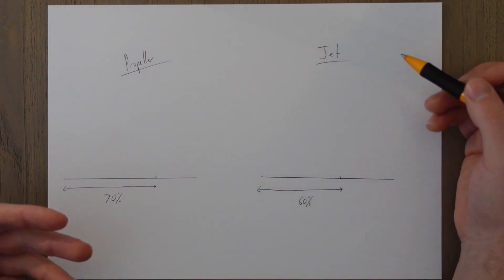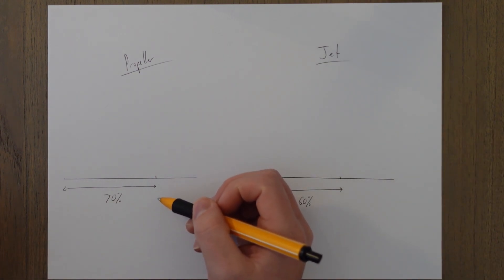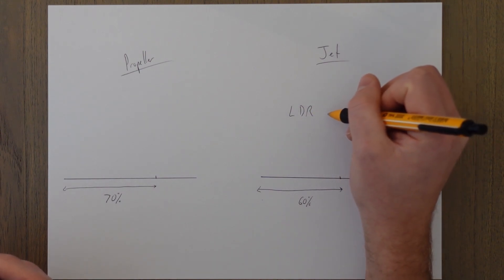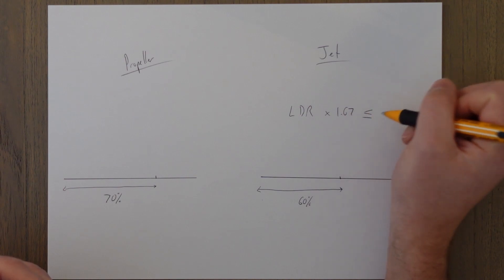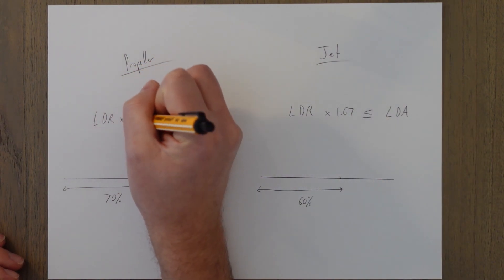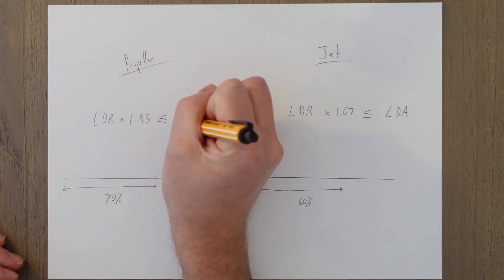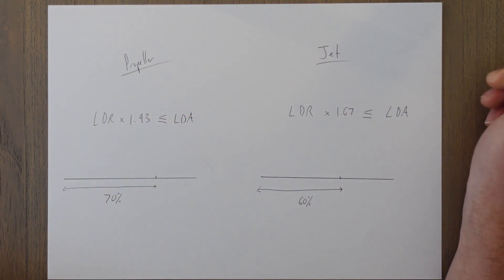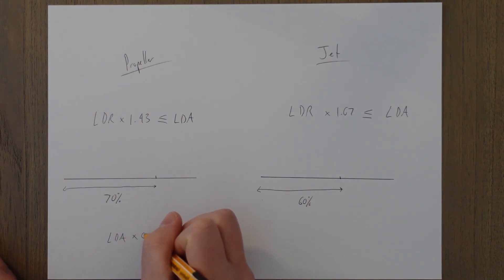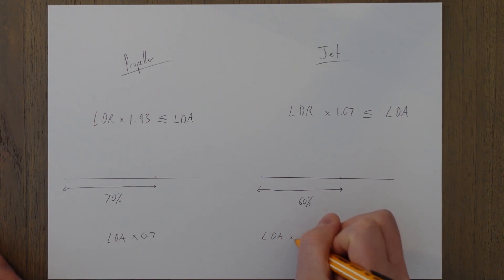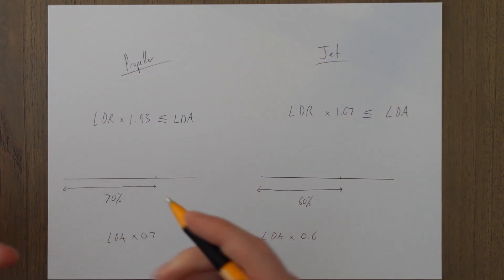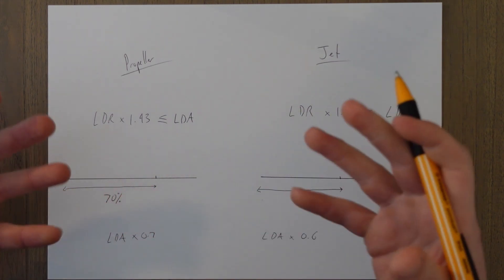For a jet for example we want to land in the first 60 percent of the runway and for propeller it's 70. This means that when we calculate our landing distance required for a jet we need to multiply it by 1.67 and that needs to be less than or equal to the total landing distance available. And for a propeller it's the landing distance required multiplied by 1.43 and that needs to be less than or equal to the landing distance available. Or alternatively you can take the total landing distance available and multiply that by 70 percent or 60 percent and that has to be your new factorized landing distance available and your landing distance required would not be allowed to be over that distance.